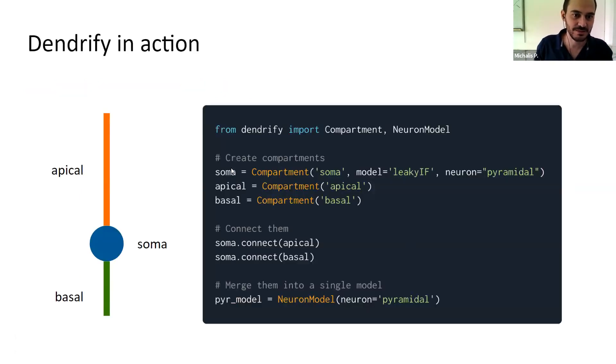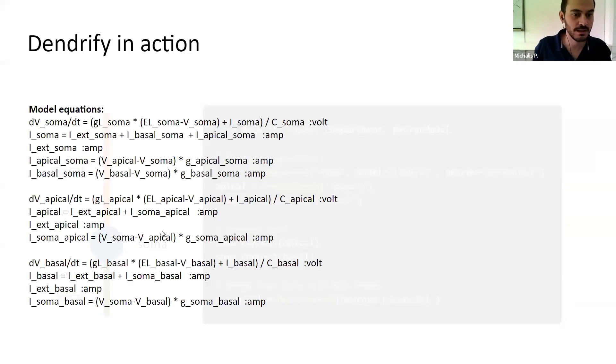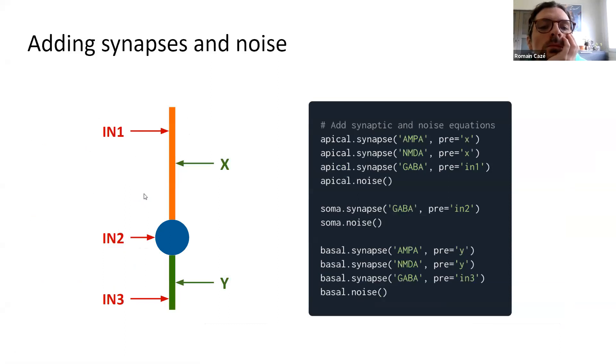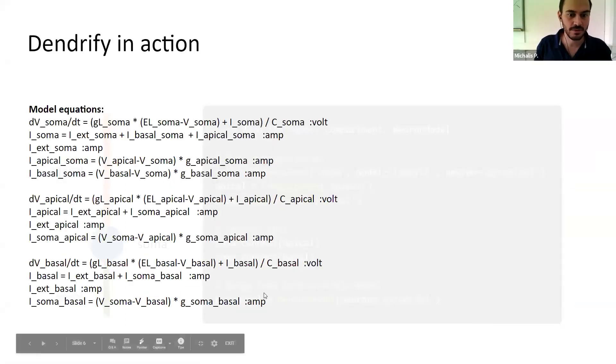So let's go to Dendrify. What is it? It's a Python package that works with Brian2 simulator, and actually helps us build compartmental neuron models with active dendrites. It's quite easy to use. You just create a compartment, and then you can connect your compartments, and it automatically generates the differential equations expressing this model. Otherwise you would have to do this manually.